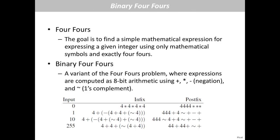The third problem is binary Four Fours. Four Fours is a popular puzzle — the goal is to find a simple mathematical expression for a given integer using only mathematical symbols and exactly four fours. The variant used in the competition is binary Four Fours: all operands are 8-bit numbers, and the allowed operators are addition, multiplication, negation, and bitwise complement. For example, to express 0: 4 times 4 times 4 times 4 equals 256, which overflows 8 bits and becomes 0. In post-fix notation you write the expression accordingly.